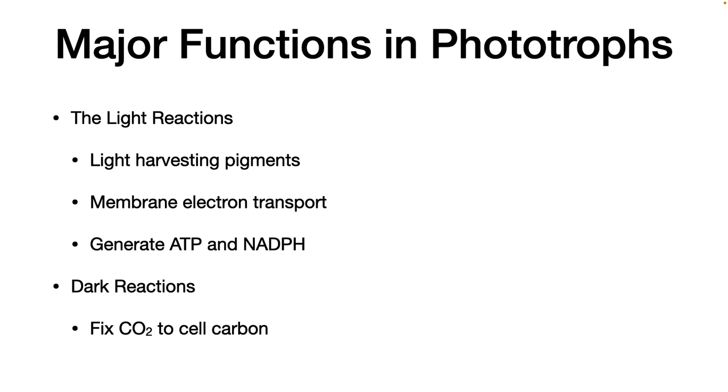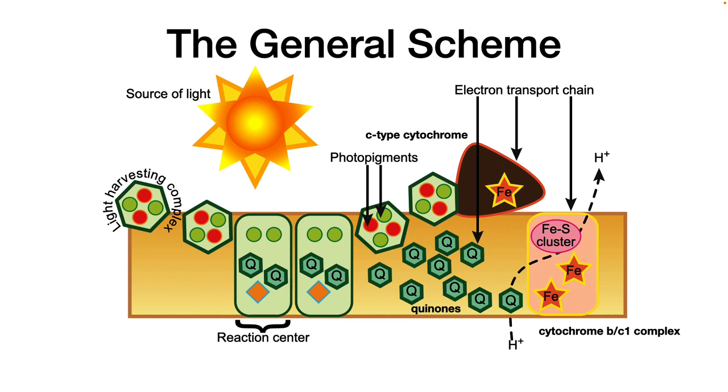Major functions in photosynthesis. To understand photosynthesis better, scientists divided the process in two broad areas: the light reactions, which require light, and the dark reactions, which don't. The light reactions use light-harvesting pigments and proteins, pass the electrons through a membrane-bound electron transport chain, and generate ATP and NADPH. The dark reactions take the energy generated in the light reactions and use it to fix carbon dioxide into cell carbon. In this lecture, we're going to talk mostly about the light reactions.